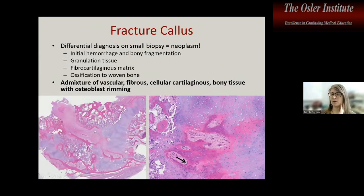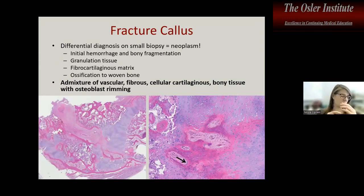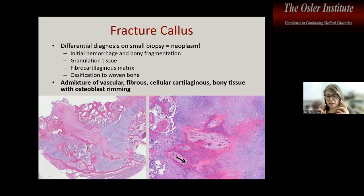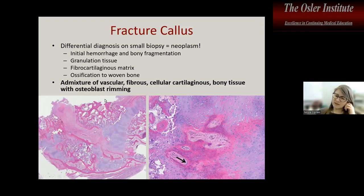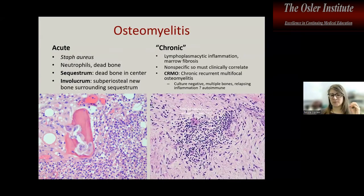Remember fracture callus — if you don't think about it, you won't make the diagnosis. It is a conglomerate of vascular fibrous tissue, cellular cartilage, and woven bone with osteoblast rimming that can look scary and almost mimic a neoplasm because it's so richly cellular. Always ask: if there's osteoblast rimming with admixed cartilage, did the patient have trauma?